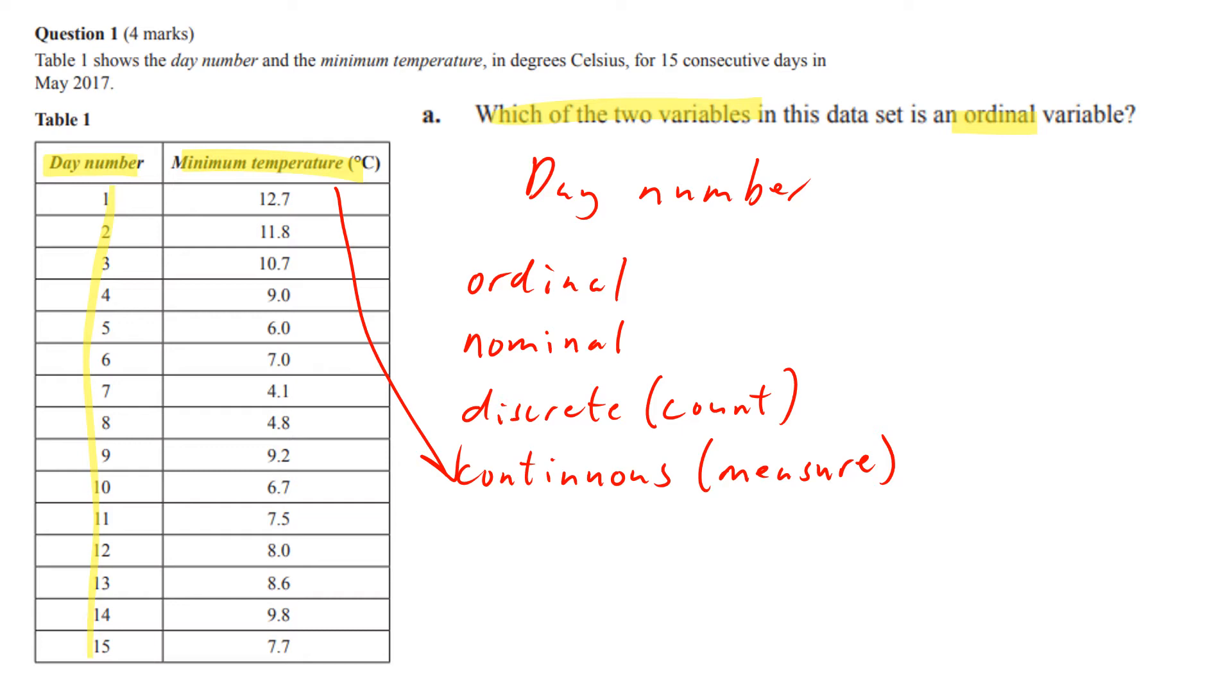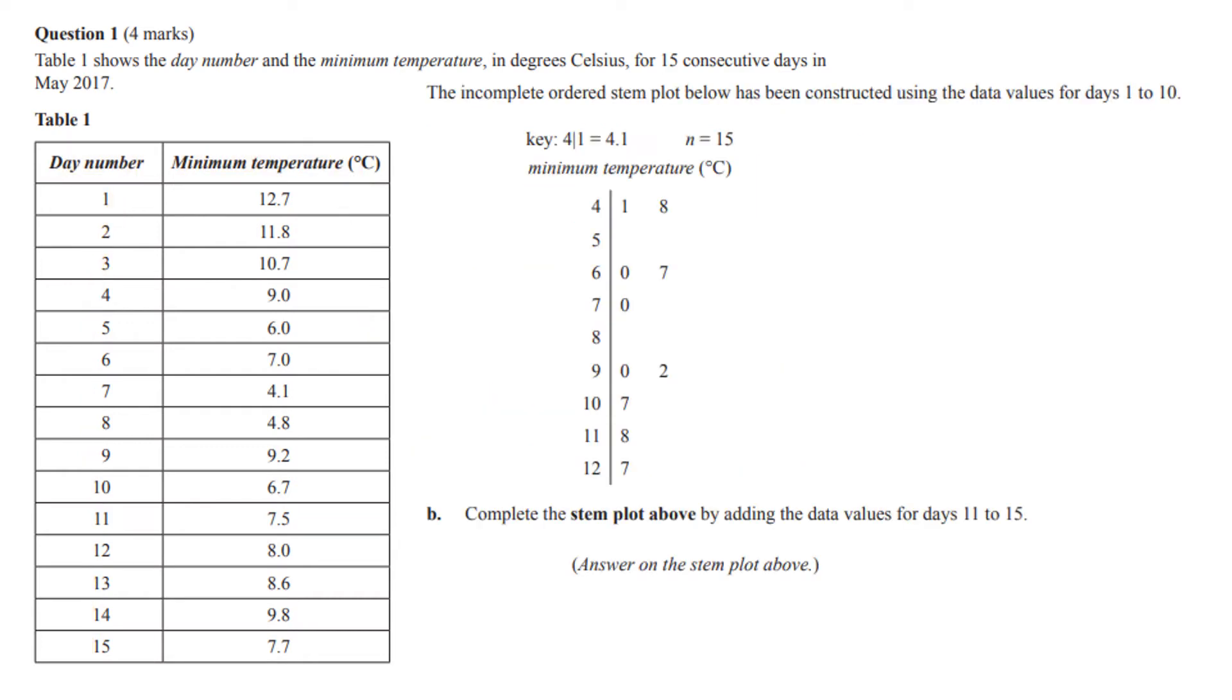Okay, we're going to complete the stem plot above by adding values for days 11 to 15. These are the values we need to be adding up here to this stem plot. We've got a key to explain that 4 slash 1 is 4.1, fairly straightforward. So if you've got 7.5 you would put a 5 here.